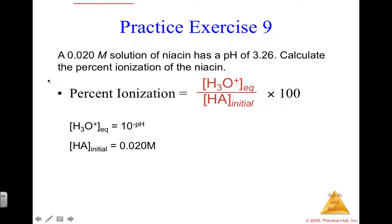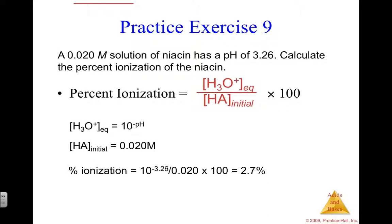You're also told the molarity of the niacin, which is your initial acid molarity, 0.020 M. Percent ionization is then 10^(−3.26) divided by 0.020, times 100 — make sure you use parentheses when necessary on your calculator. That equals 2.7%. This tells us that a 0.020 molar solution of niacin has only 2.7% ionization, meaning we have mostly reactants and not many products.